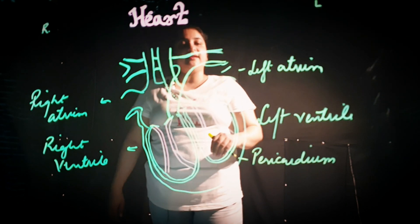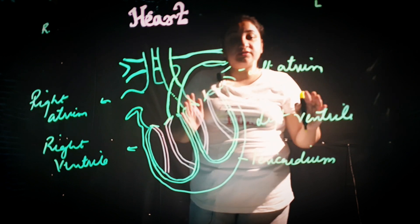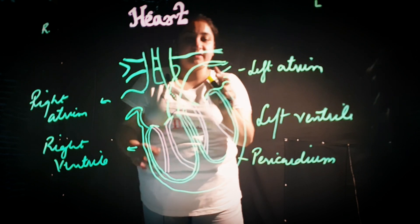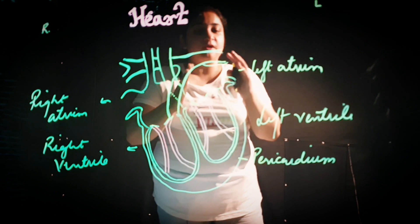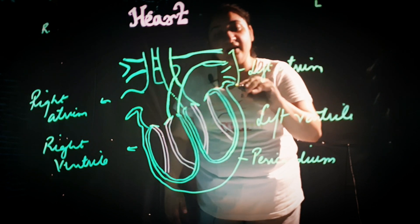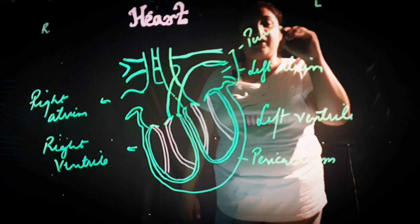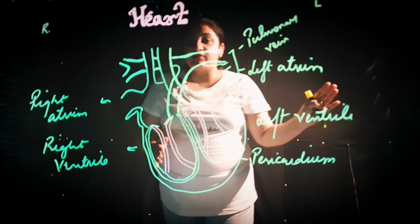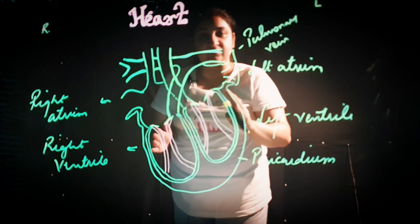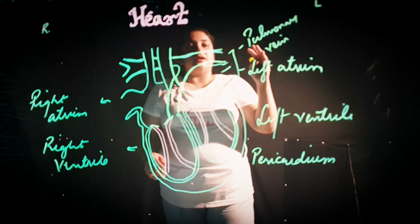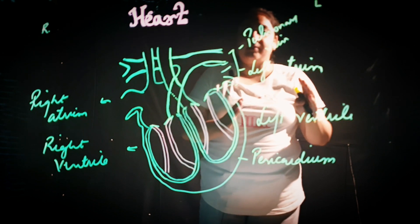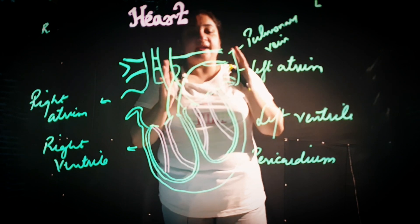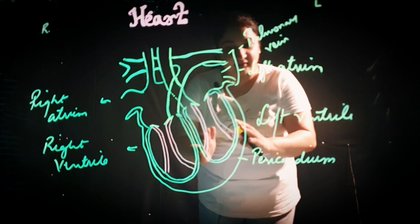Now let's see the working again. Oxygenated blood — blood carrying oxygen — comes from the lungs to the left atrium. The blood is collected in the left atrium. Where does the blood come from? It comes from the pulmonary veins. Pulmonary relates to the lungs, and veins carry blood to the organs. The pulmonary veins bring blood from the lungs to the left atrium, and at this time the atrium expands.